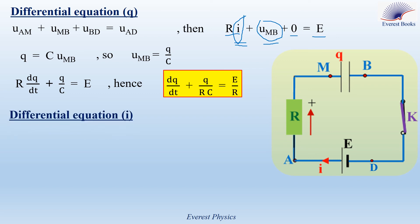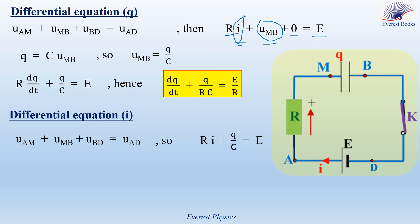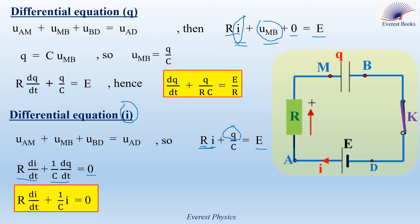Now let's determine the differential equation governing the variation of current I. Applying Kirchhoff's voltage law gives RI plus Q over C equals E. To express this in terms of I, differentiate with respect to time. R is constant so the derivative of RI is R times DI/DT. The derivative of Q over C is (1 over C) times DQ/DT, which equals I over C. E is constant so its derivative is 0. This gives R times DI/DT plus I over C equals 0. This is the differential equation governing the variation of current I.